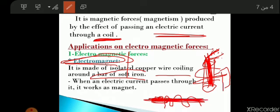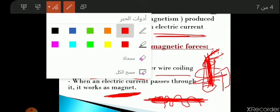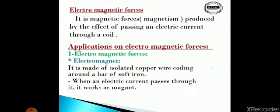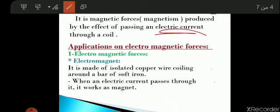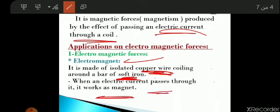When electric current passes through the electromagnet, it works as a magnet. That is the main idea of how an electromagnet works — by passing electric current, it acts as a magnet. The electromagnet is made of: number one, copper wire; number two, soft iron.